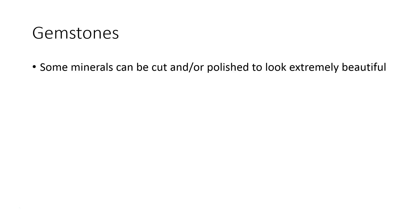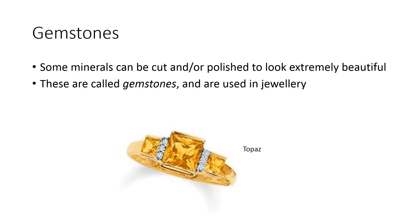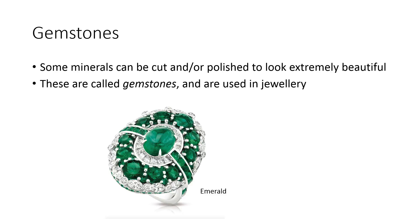This next bit isn't something you need to memorize, but it's a little bit interesting — what's a gemstone? Some minerals can be cut and polished, or simply polished, to look extremely beautiful. These are called gemstones and we use them in jewelry. Some examples would be sapphire, topaz, or emerald. And that's what we need you to know about minerals today.